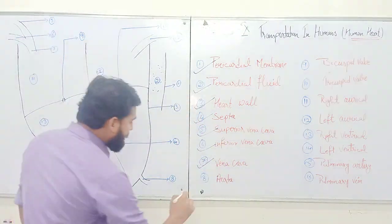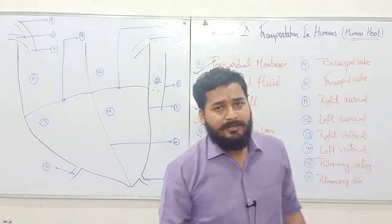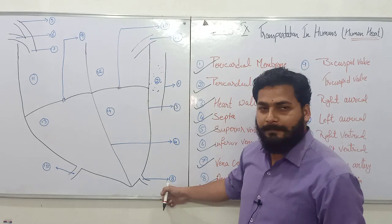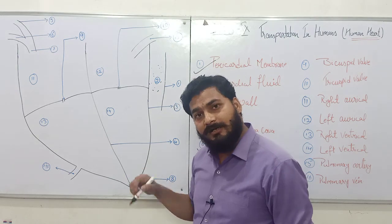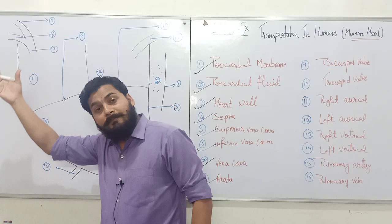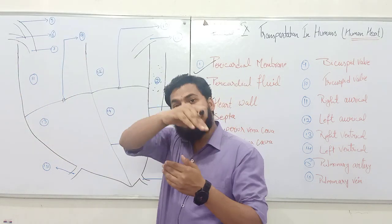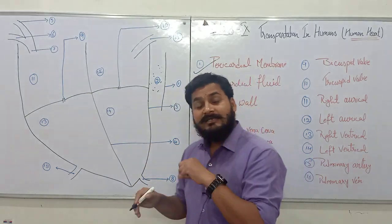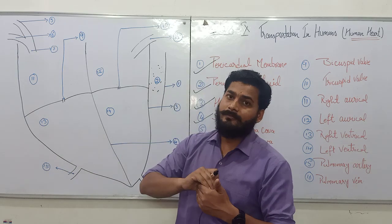Then is number eight, the aorta. The aorta has the basic function of supplying blood from the heart to different parts of the body. The vena cava system brings blood to the heart from different parts of the body, while the aorta supplies blood from the heart to the other parts of the body.